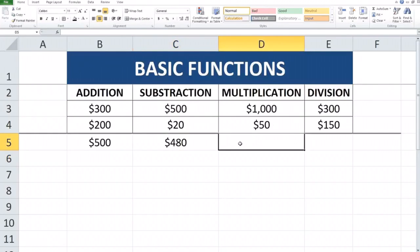Multiplication, so we are trying to multiply 1000 times 50. So you point at D3 times 50, enter. And for division you try to divide 300 by 150.